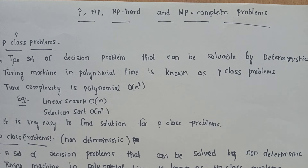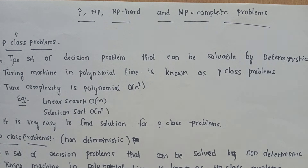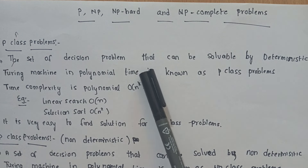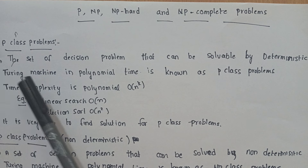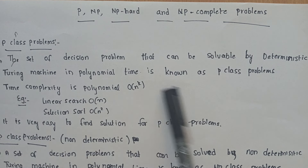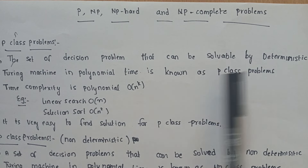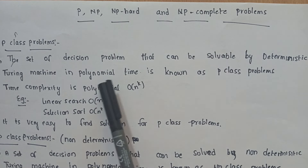When we solve problems, there are a finite number of steps, so the algorithm takes some time. Based on the time complexity, there are some categories of these problems. Coming to the P class: the set of decision problems that can be solved by a deterministic Turing machine in polynomial time is known as P class problems.